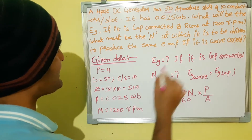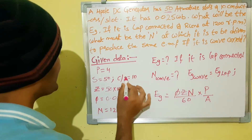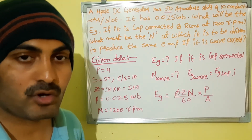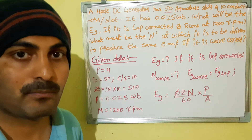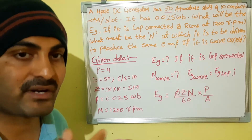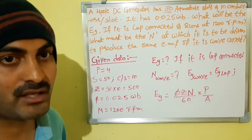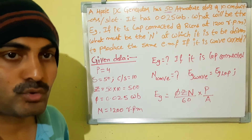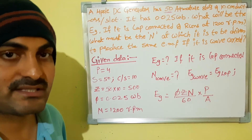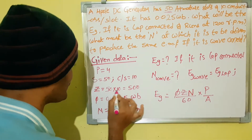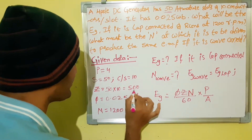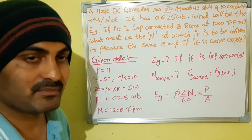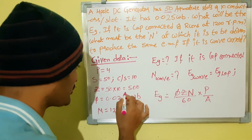Conductors per slot is 10. So total number of conductors Z equals number of conductors per slot into total number of slots, that is 50 into 10, which equals 500 conductors. Total number of conductors in the machine is equal to 500.